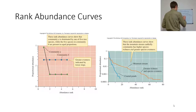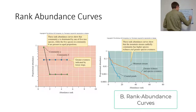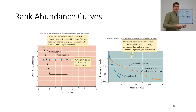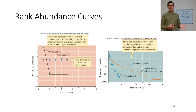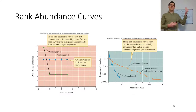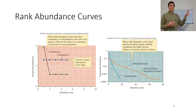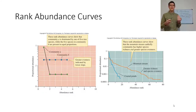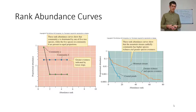Rank abundance curves have the abundance rank on the x-axis and the proportional abundance on the y-axis, which is logarithmic. Community A — 21 of one species, one each of the other four — shows a relative rank abundance of 0.84 for that first species and much lower for the rest. The more even community has proportions around 0.2 for each species. The slope of the rank abundance curve indicates evenness: a steeper slope means a less even community.